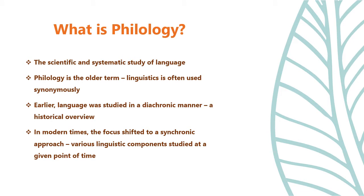During the 19th century, language was studied in a diachronic manner. Diachronic linguistics is also known as historical linguistics because it focuses on a historical overview — looking at language and its evolution through history over a period of time. But with the onset of the 20th century, the focus shifted to a synchronic approach, which looks at the various components of language at a particular point of time.